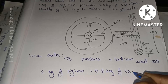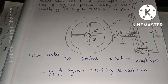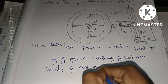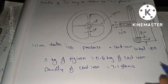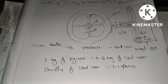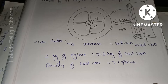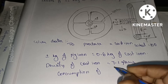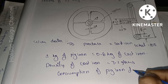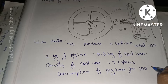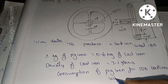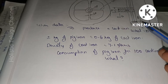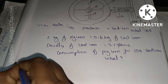From the given data: we need to produce 100 cast iron wheels. 1 kg of pig iron produces 0.6 kg of cast iron. The density of cast iron is 7.2 g/cc. Now we will find the volume of the rim, hub, and spokes.